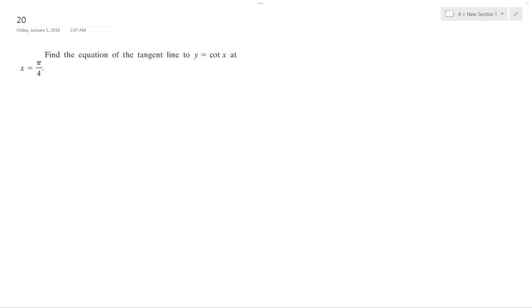All right, so we want to find the tangent line to y equals cotangent x at x equals pi over 4. What I need to do first is find the derivative of the function so I can get the slope at that given point.